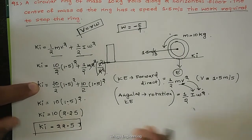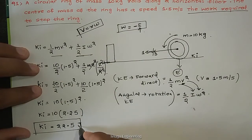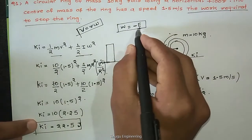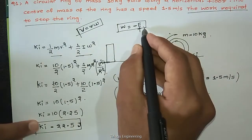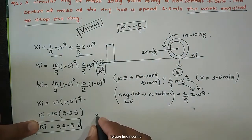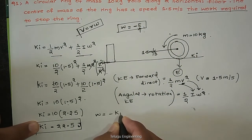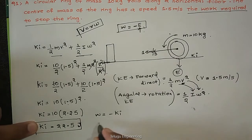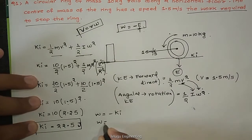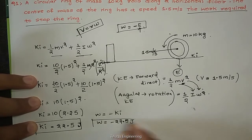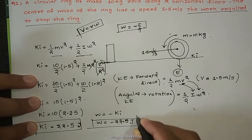The energy is 22.5 joules. Work done equals negative of the kinetic energy of that particular object. So work done equals minus 22.5 joules. This is our final answer.